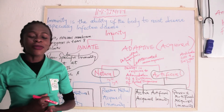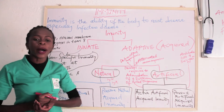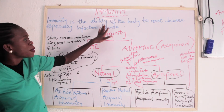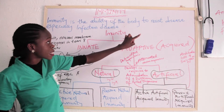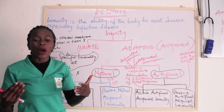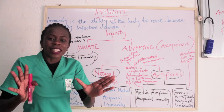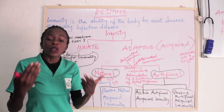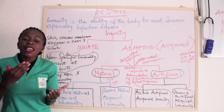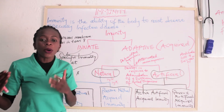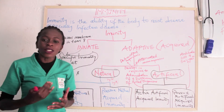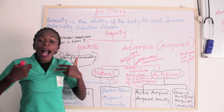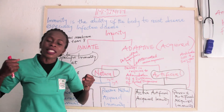Today we're going to be talking about immunity. Immunity is the ability of the body to resist disease, especially infectious ones. The ability of your body to resist disease, to fight against disease, to stop disease is known as immunity. If there is no immunity, no immune response in our body, we will easily come down with disease and infection.